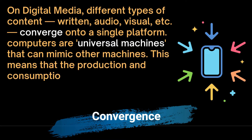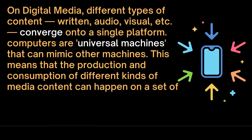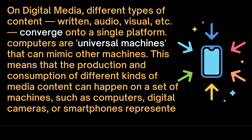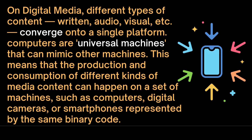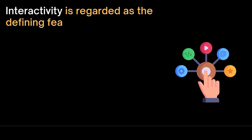Computers are universal machines that can mimic other machines. This means that the production and consumption of different kinds of media content can happen on a set of machines such as computers, digital cameras, or smartphones, all represented by the same binary code.